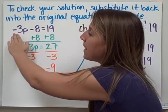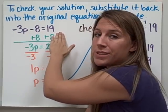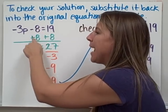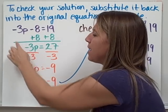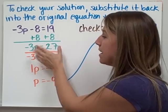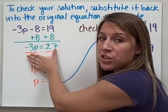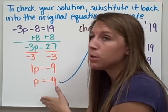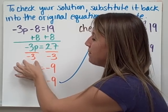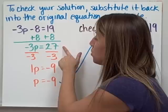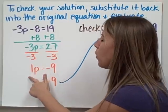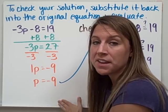So here I have an equation, negative 3p minus 8 equals 19. I add 8 to both sides first. Negative 8 plus 8, that is 0. And then I'm left with negative 3p equals what 19 plus 8 is, which is 27. Now, this is just a one-step equation. To solve for p, I divide by negative 3 on both sides to undo this multiplication. Negative 3p divided by negative 3, that's going to give me 1p. And 27 divided by negative 3 is going to give me negative 9. Because 1p is negative 9, I know that p is negative 9.